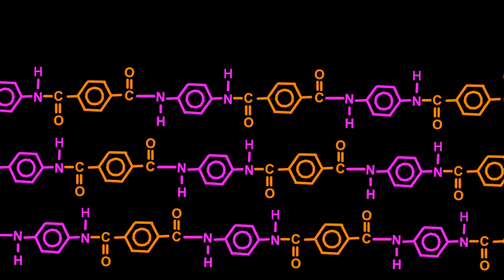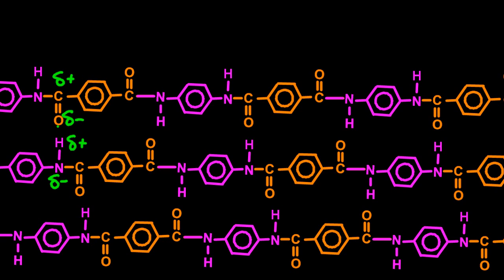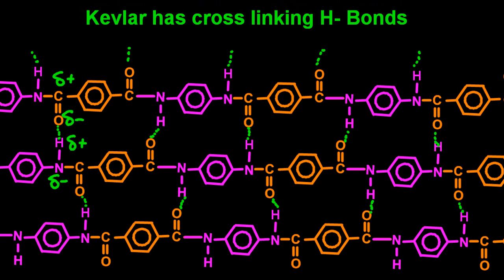When the molecules of Kevlar are woven together they end up in parallel, like these three chains here. The oxygen atom on the top molecule is slightly negative compared to the carbon atom it's attached to — oxygen is more electronegative than carbon. Directly below it there's another polar bond, giving a little negative and a little positive across two separate chains. That's called a hydrogen bond — the electrostatic attraction. Remember, when hydrogen is attached to nitrogen, oxygen, or fluorine it can make intermolecular bonds. These hydrogen bonds are some of the strongest intermolecular bonds, so the chains of Kevlar are very tightly bonded together. Kevlar has cross-linking hydrogen bonds.